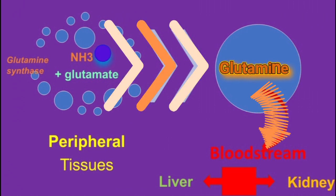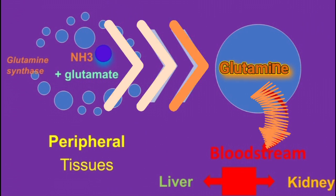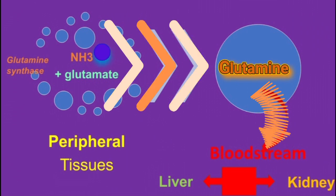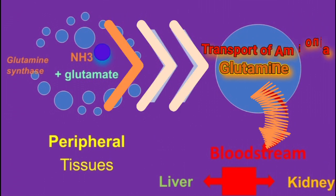It is important to distinguish the key roles of glutamine and glutamate. Glutamine, formed in peripheral tissue by incorporating ammonia into glutamate, serves to detoxify peripheral ammonia and serves as a vehicle for transport of ammonia back to the liver or kidney.